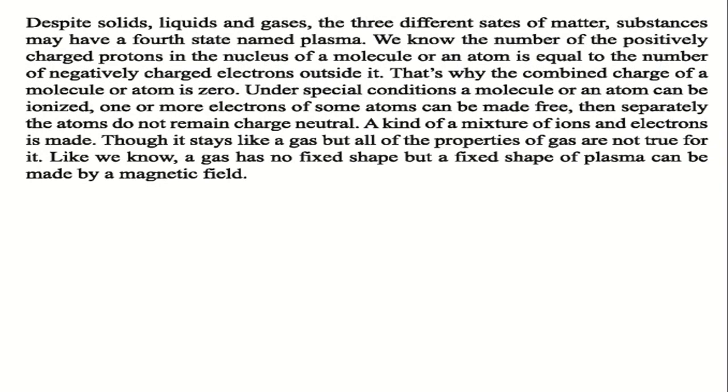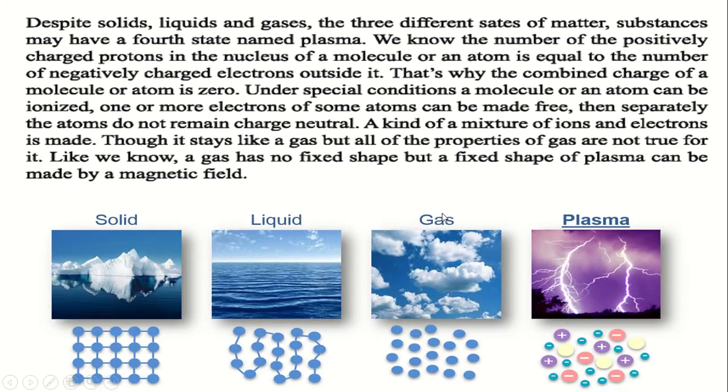Dear students, despite solid, liquids and gases, the three different states of matter, substances may have a fourth state named plasma. We know the number of the positively charged protons in the nucleus of a molecule or atom is equal to the number of negatively charged electrons outside of it. That's why an atom is electrically neutral in charge. Under special conditions a molecule or an atom can be ionized. One or more electrons of some atoms can be made free. Then separately the atoms do not remain charged neutral. A kind of a mixture of ions and electrons is made. Though it tastes like a gas but all the properties of gas are not true for it. Like we know a gas has no fixed shape but a fixed shape of plasma can be made by applying a strong magnetic field.